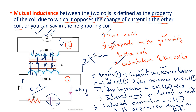After switching on the key, current starts flowing from 0 to I — any value. When the current is increasing, it increases the magnetic flux. That magnetic flux is also produced in coil two, and this magnetic flux creates an induced EMF in coil two, and this induced EMF produces an induced current in coil two.